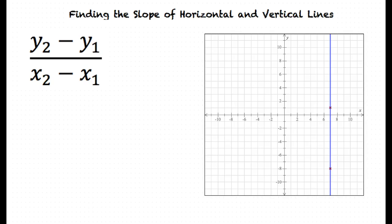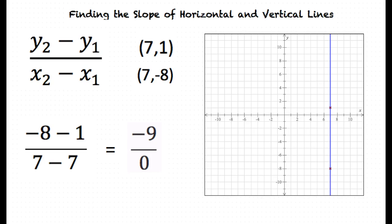Let's first look at the graph of a vertical line. The points we will use from this graph are 7, 1 and 7, negative 8. Using the slope formula, we will now find the slope of the line. This equals negative 9 over 0.